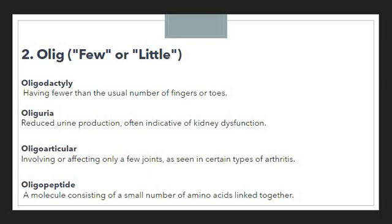Oligodactyly means having fewer than the usual number of fingers and toes. If someone has fewer fingers or toes on their hand or foot, we use the terminology 'oligodactyly.' Here we use olig to showcase the sense of few or little. Then we have 'oliguria.'